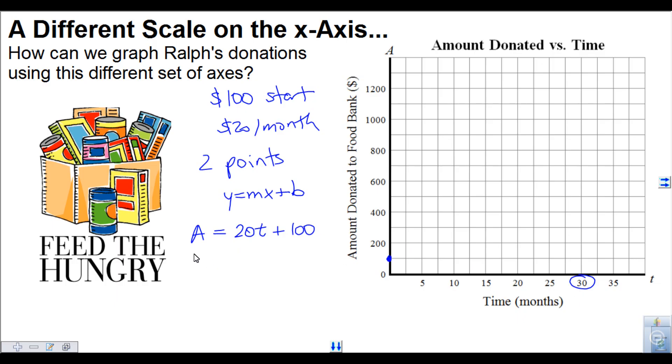Now I'm interested in 30 months, so I can replace the letter t with 30 plus 100. 20 times 30 is 600 plus 100, so the amount donated is $700. Now that makes sense. You can think about it intuitively as well. If it's $20 a month for 30 months, you can do 20 times 30, which is 600. But don't forget that he paid $100 at the beginning, so that's why we added $100. So altogether we have $700.